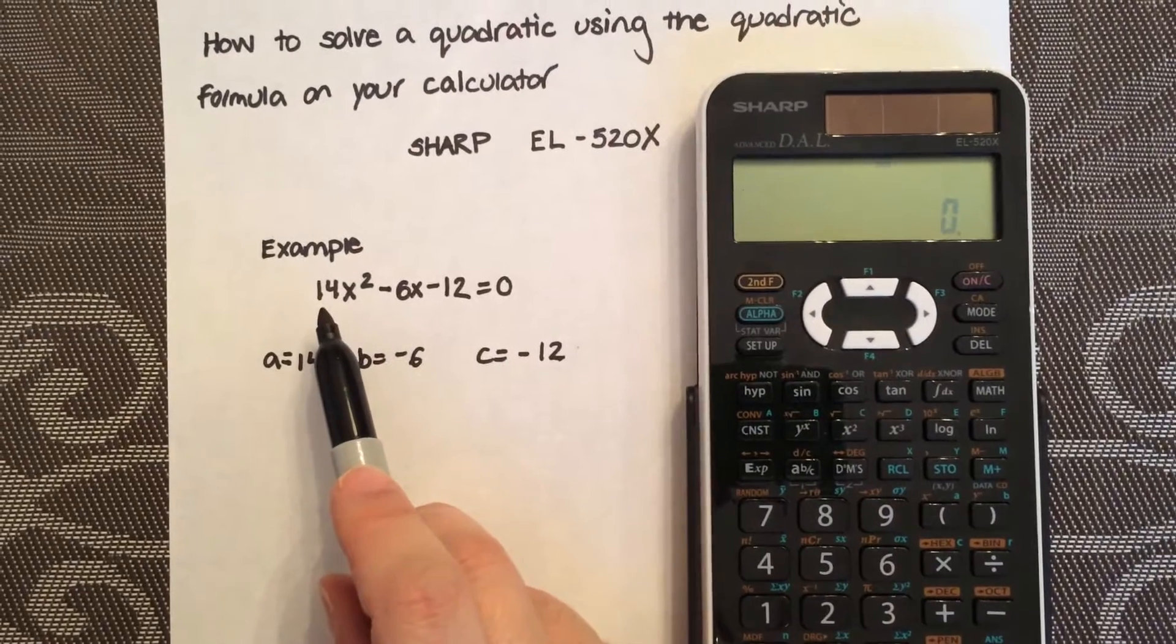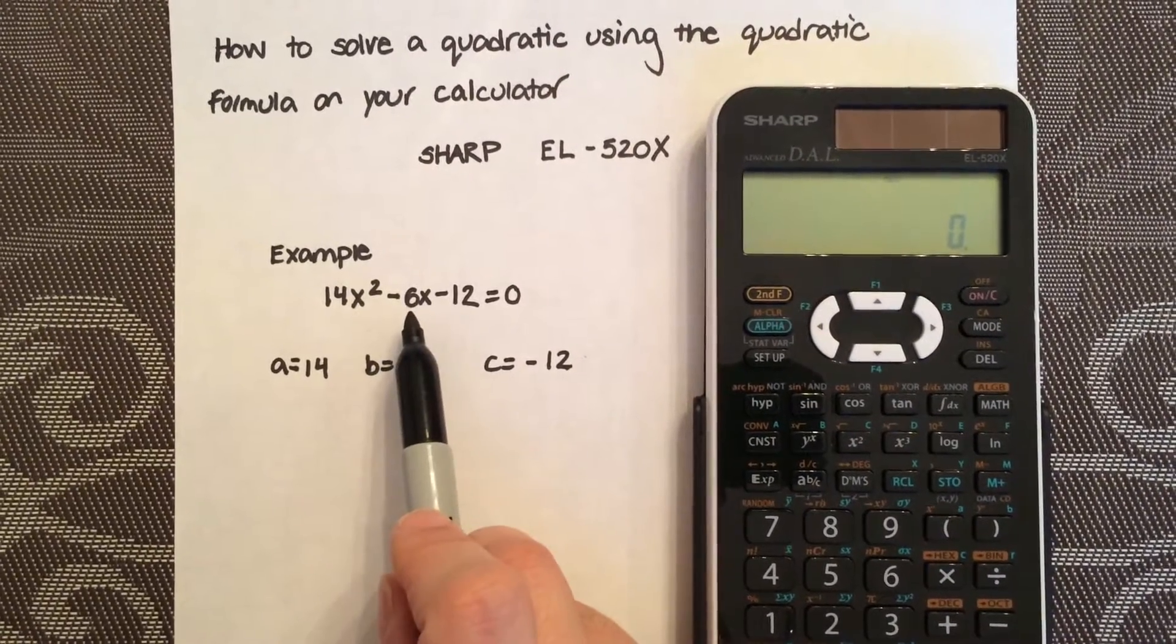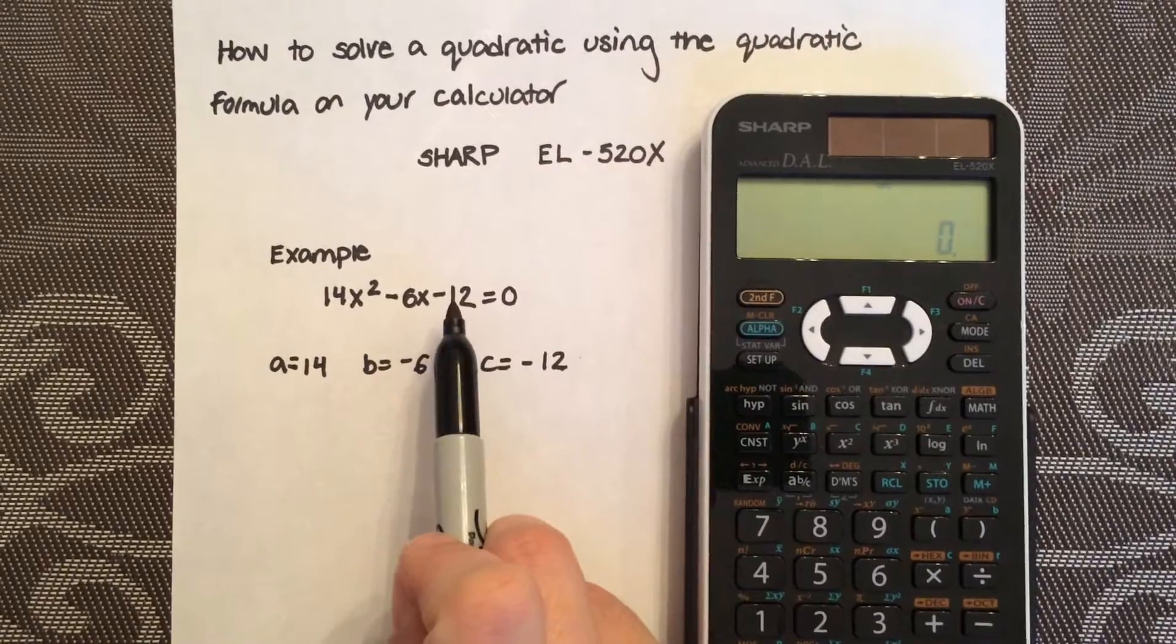Your A coming from here is 14, B is -6, C is -12.